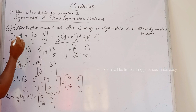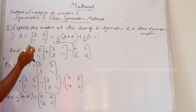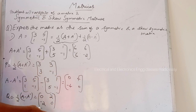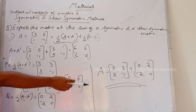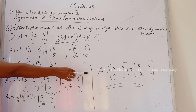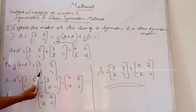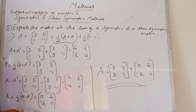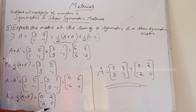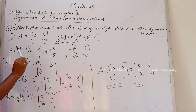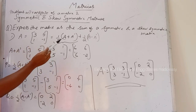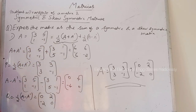Therefore, matrix A can be expressed as P + Q, that is [3, 3; 3, -1] plus [0, 2; -2, 0]. In this way we can express a matrix as the sum of a symmetric and a skew-symmetric matrix.